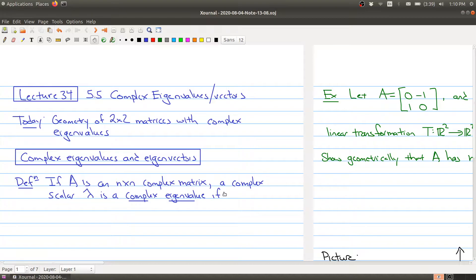It's exactly the same definition that you've seen before, but now we're allowing both the scalar to be a complex number and the entries in our vector to also be complex numbers. So a complex scalar lambda is a complex eigenvalue if there is a non-zero vector v with allowing complex entries such that A times v is equal to lambda times v.